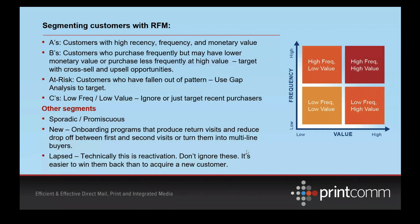The B-segments are the two shoulder segments. The upper left is high frequency, low value; the lower right is low frequency, high value. What you're trying to do with those two segments is move them toward the upper right corner. If they're high frequency but low value, you're trying to increase the value of that customer. If they're lower right — high value but low frequency — you're trying to increase frequency or items per transaction, perhaps targeting them with offers that incent them to come in more often or generate additional purchases.